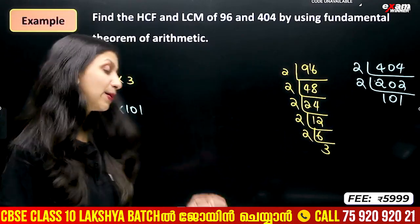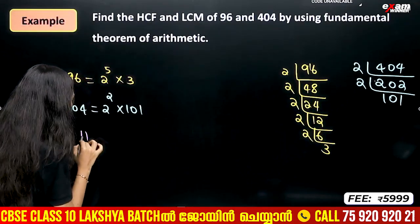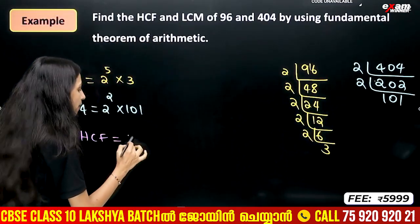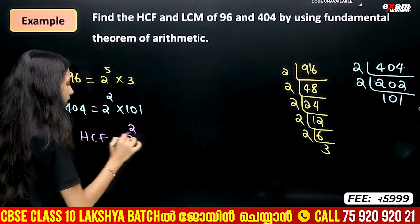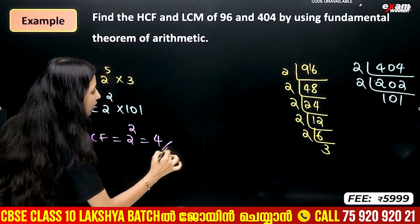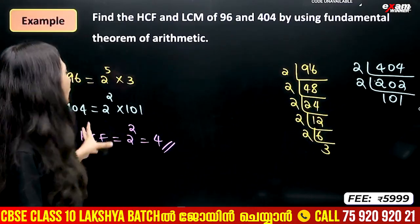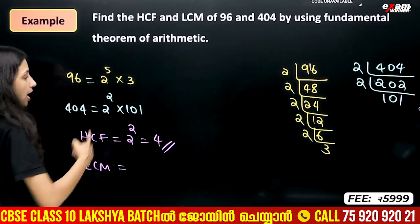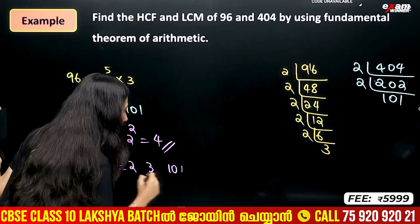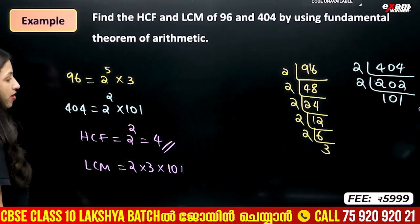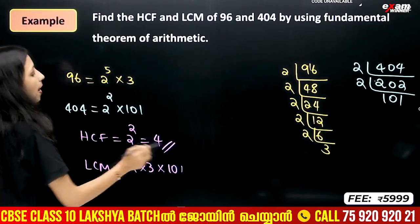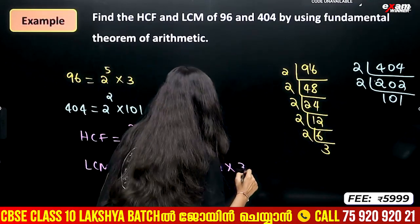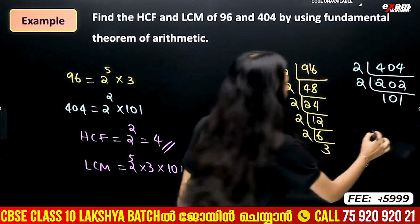Now we find HCF and LCM. For HCF, we take common factors at their least power. The common factor is 2, and the least power is 2 squared. So HCF is 4. For LCM, all factors are 2, 3, and 101 at their highest powers: 2 raised to 5.